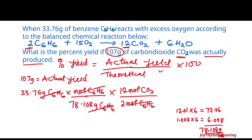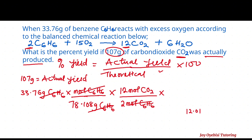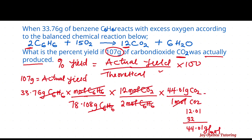You now have moles of carbon dioxide, but theoretical yield is in grams, so you're going to multiply by the molar mass of carbon dioxide. The molar mass of CO₂: carbon is 12.01, oxygen is 16 × 2 = 32, giving us 44.01 grams per mole. So put 44.01 grams CO₂ over 1 mole, and the moles of CO₂ cancel. Your final calculation is 33.76 × 12 × 44.01 divided by 78.108 × 2, which gives us approximately 114 grams.